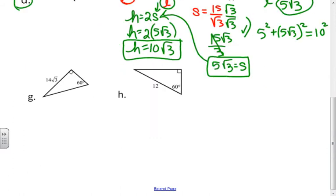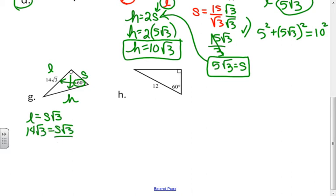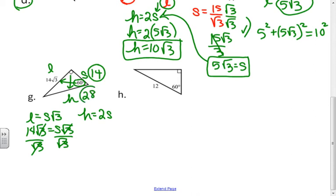In the next example, I know the 60-degree angle, so the given side — fourteen square roots of three — is the long side. The long side equals the short side times the square root of three, so fourteen square roots of three equals s times the square root of three. Dividing both sides by the square root of three, my short side is fourteen. The hypotenuse is two times the short side, so my hypotenuse is twenty-eight.